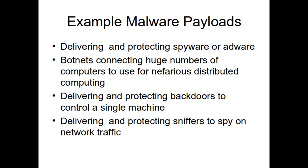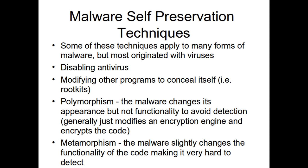Botnets are also used for delivering and protecting backdoors on a single machine versus an entire botnet, and delivering and protecting sniffers to spy on network traffic. This is just a few examples. Most self-preservation techniques originated with viruses, but many different types of malware use them. The first and most obvious is disabling antivirus. Antivirus detects any type of malicious software they can write code to detect.